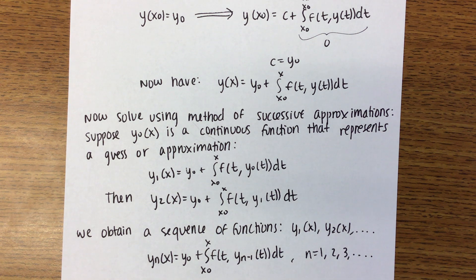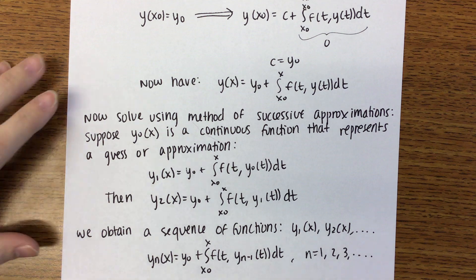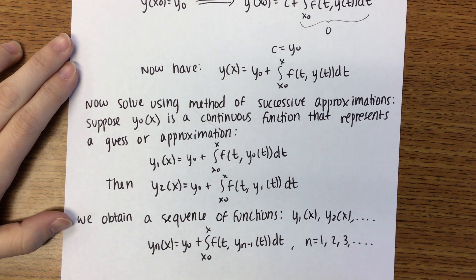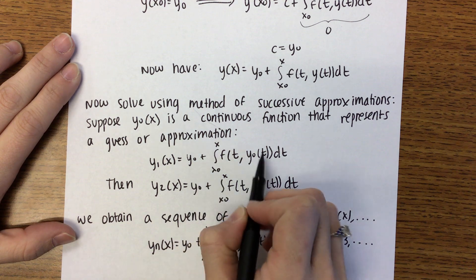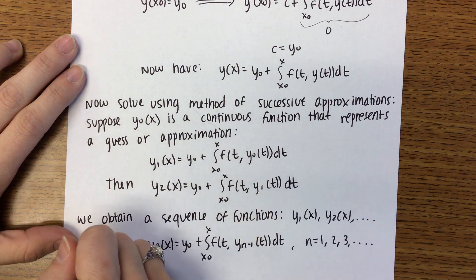So you'll have your Y1 of X, Y2 of X, and you'll keep going. So the general form Yn of X then will be Y0 plus the integral from X0 to X of F of T, Y of N minus 1 of T, DT, in the case where N is at least 1.